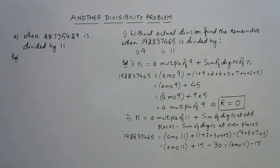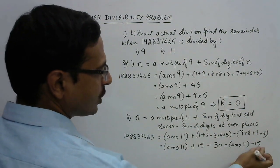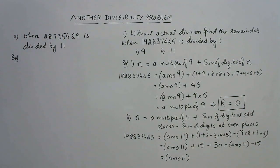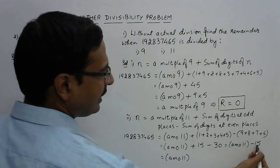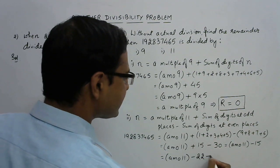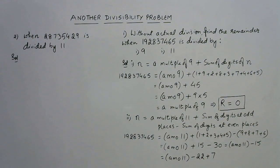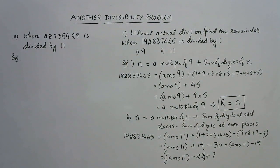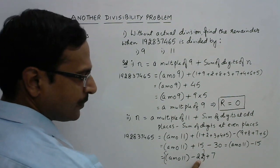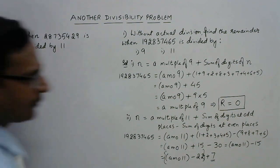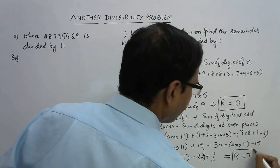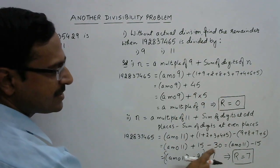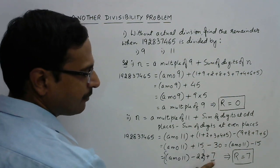Now how do we express minus 15 as a multiple of 11? Since it is not divisible by 11, I will make a small change. The next number divisible by 11 after 15 is 22. So I write minus 15 as minus 22 plus 7. Minus 22 plus 7 is obviously minus 15, and the minus 22 part becomes a multiple of 11. So the remainder is 7. Similarly, when a sum of digits is not divisible by 9, you convert it to the nearest multiple of 9 and what remains is the remainder.